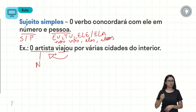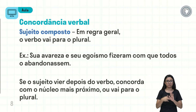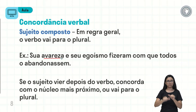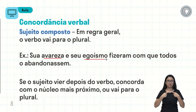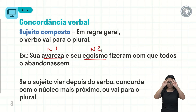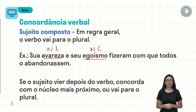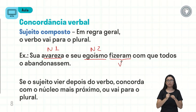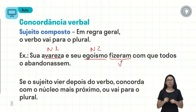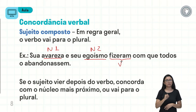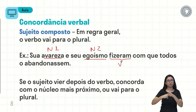Se eu tiver mais de um núcleo no sujeito composto, o verbo vai obrigatoriamente para o plural. Exemplo: 'sua avareza e seu egoísmo' — temos dois núcleos: avareza e egoísmo. Sujeito composto. Logo, o verbo 'fizeram' vai para o plural. Se for apenas um núcleo, o verbo fica no singular.